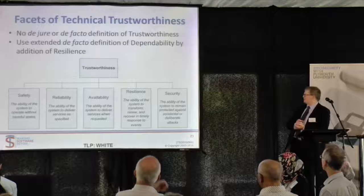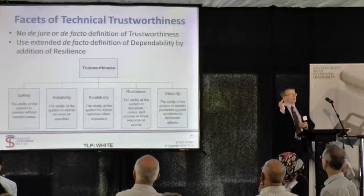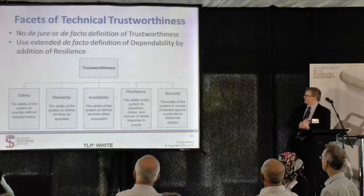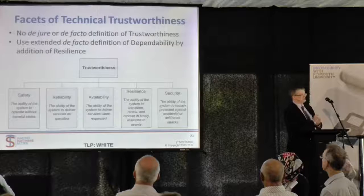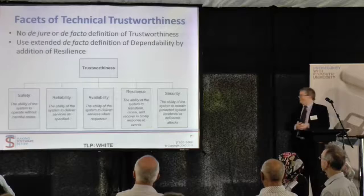So this is our definition of trustworthiness. Anyone who's read Ian Sommerville's Software Engineering — which he's been publishing in multiple editions since a very long time ago — will know he defined dependability. What we agreed with Ian is: we take his dependability definition — Safety, Reliability, Availability, and Security — and blister Resilience into it to make our trustworthiness definition. So if that looks familiar to some people, there is a reason why.